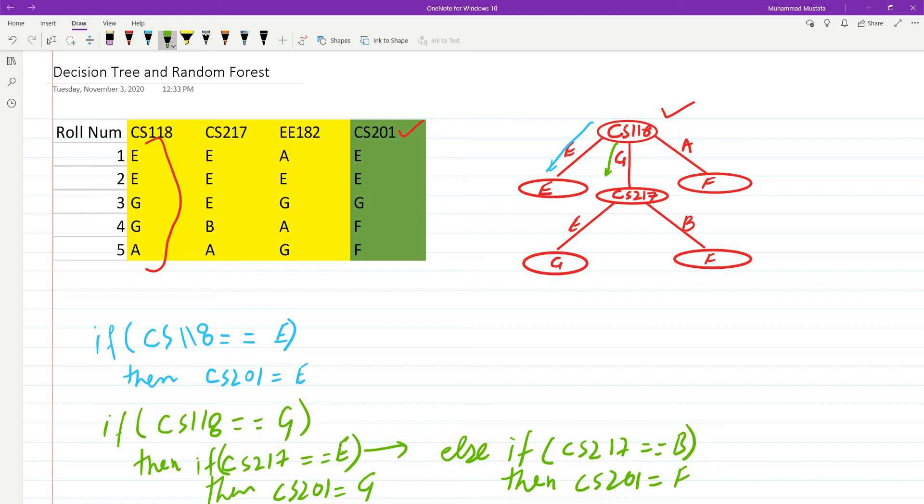So this blue one was the first rule. This is rule number 2a, and this is rule number 2b. We have generated three rules from this decision tree.